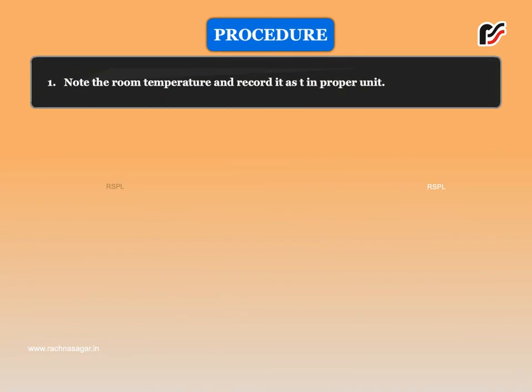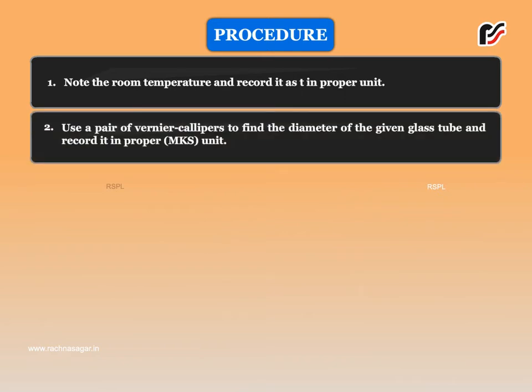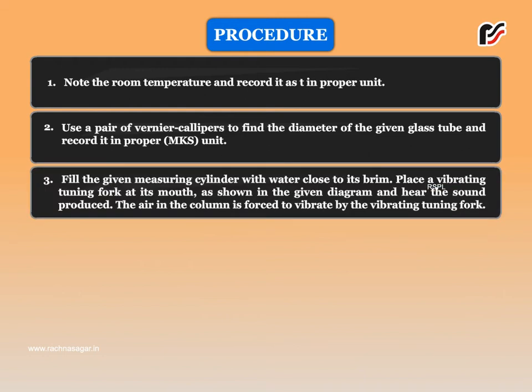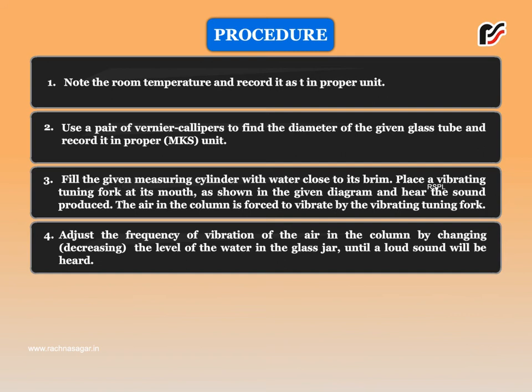Procedure: Note the room temperature and record it as T in proper units. Use a pair of Vernier calipers to find the diameter of the given glass tube and record it in MKS units. Fill the given measuring cylinder with water close to its brim. Place a vibrating tuning fork at its mouth as shown in the diagram and hear the sound produced. The air in the column is forced to vibrate by the vibrating tuning fork. Adjust the frequency of vibration of the air in the column by decreasing the level of water in the glass jar until a loud sound is heard.